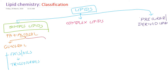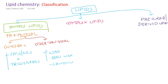If the alcohol is other than glycerol, then they are called wax. Examples are beeswax, lanolin, and whale oil. They don't have any metabolic effect, but they are used in industry for nail polish, ointments, and liniments — mainly in the pharmaceutical industry. But for us, triglycerides are very important.